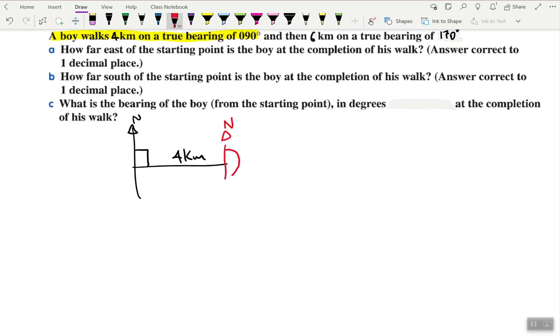I'll get rid of a bit of this line. 170 is about there, and that is about six kilometers at 170. We've basically drawn our initial diagram now. Let's look at the question.